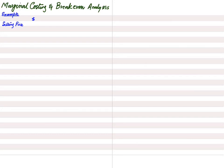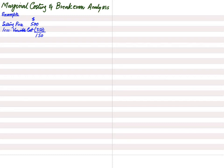Let's use an example to explain the concepts. We have started a business selling shirts. We are selling a shirt for $500, and that shirt costs us $350. We are buying shirts from a wholesaler for $350. If I deduct the variable cost from the selling price, I get $150. Now some people think this $150 is profit — but it is basically not a profit.